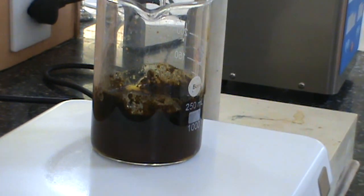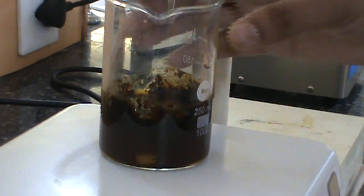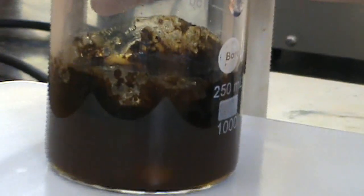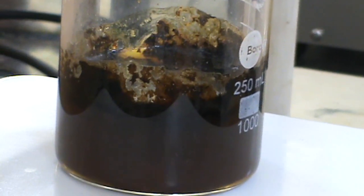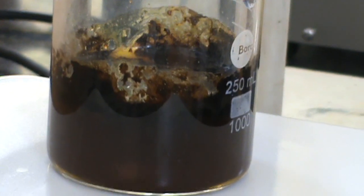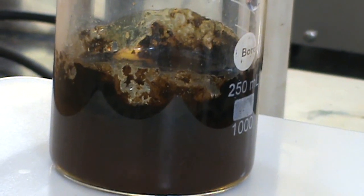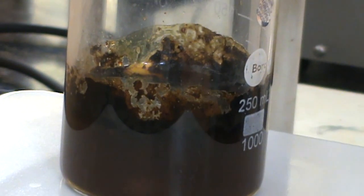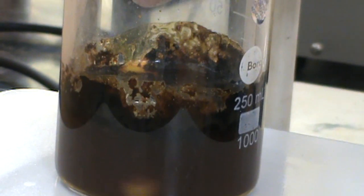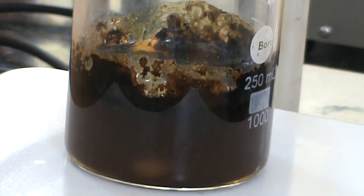Black precipitate has already formed. We will continue the stirring for some time, after that we will filter out the iron oxide nanoparticles, and then we will see the effect of magnet on these.